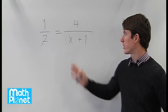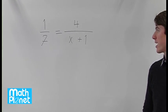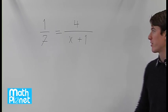This rational expression, 1/7 = 4/(x+1), can be solved in the following way.